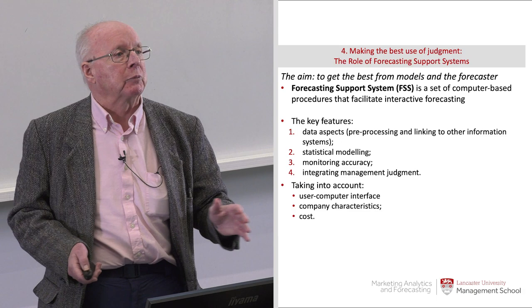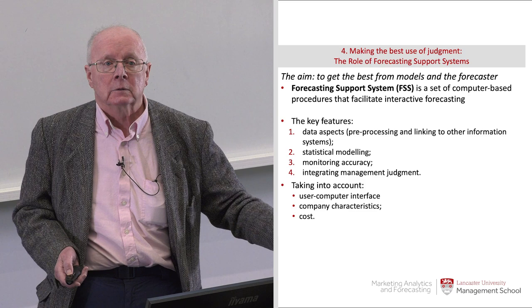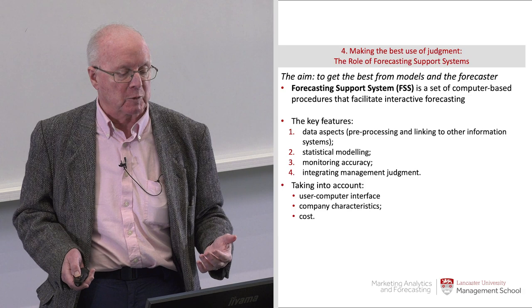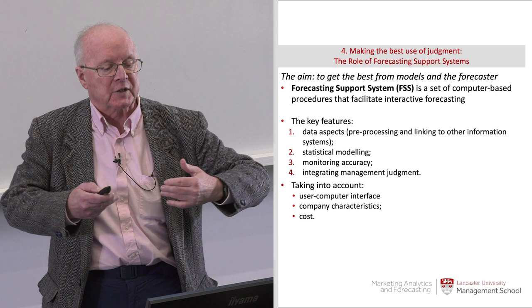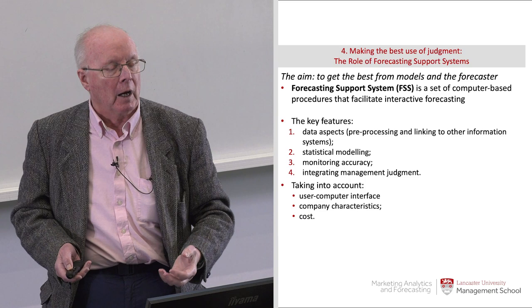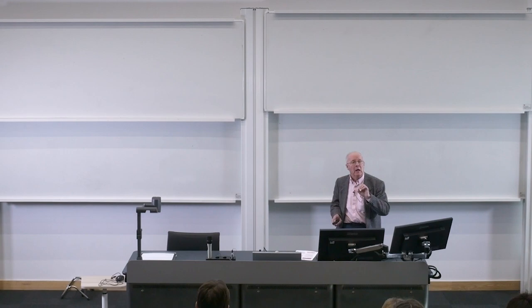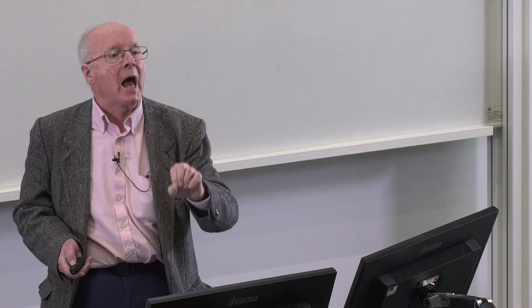We can overcome aspects of the problems that judgment has by using a forecasting support system — a computer-based system which has data added into it, statistical modelling features, and integrates with management judgment. Forecasting support systems, which exist in organizations, have people on the one hand, and data and statistical methods on the other. We'll talk about these support systems in a subsequent video. One important approach to overcoming the inadequacies of both judgment and statistical models is to combine them in a forecasting support system.